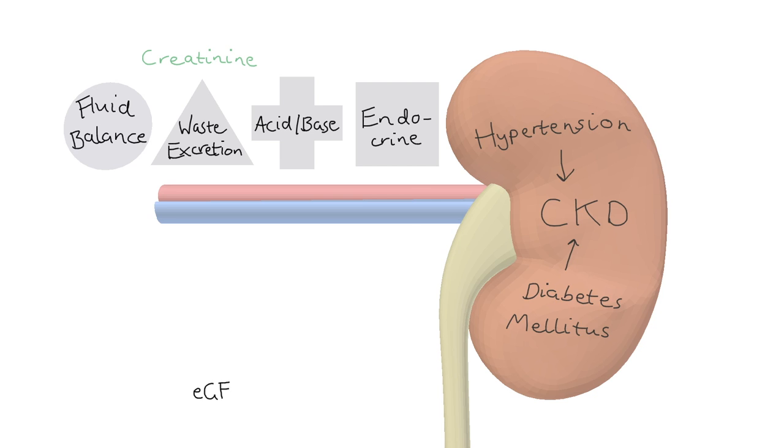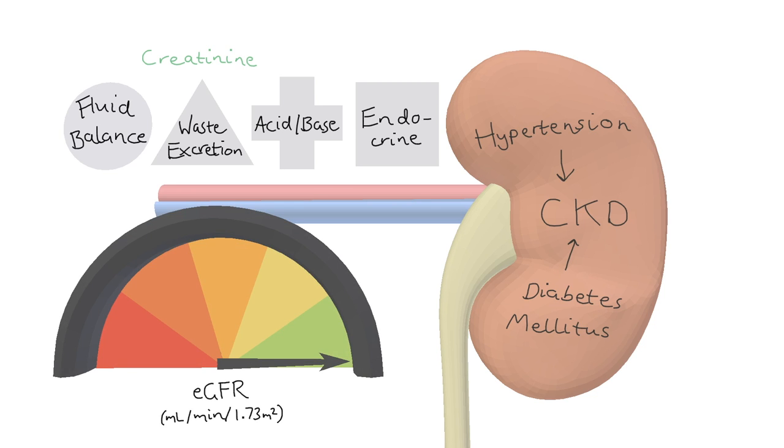We then get a value called the estimated glomerular filtration rate, or eGFR. The units for that are mils per minute per 1.73m2. This allows us to stage the disease on our GFR ohmmetre here. GFR from 120 to 60 can be normal but is classed as CKD stage 1 or 2 if any of the following is present.